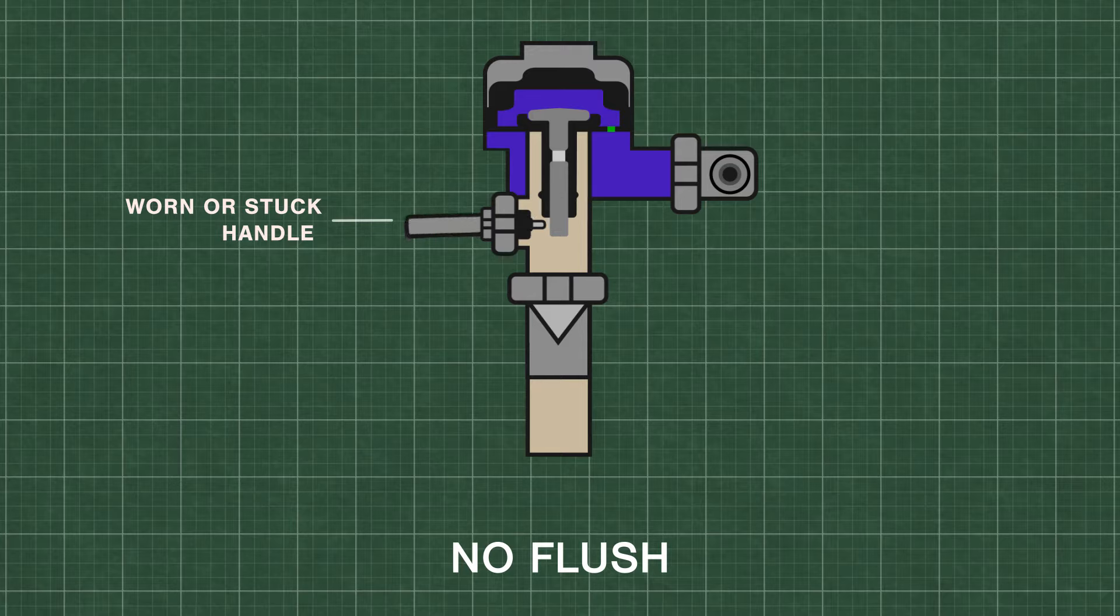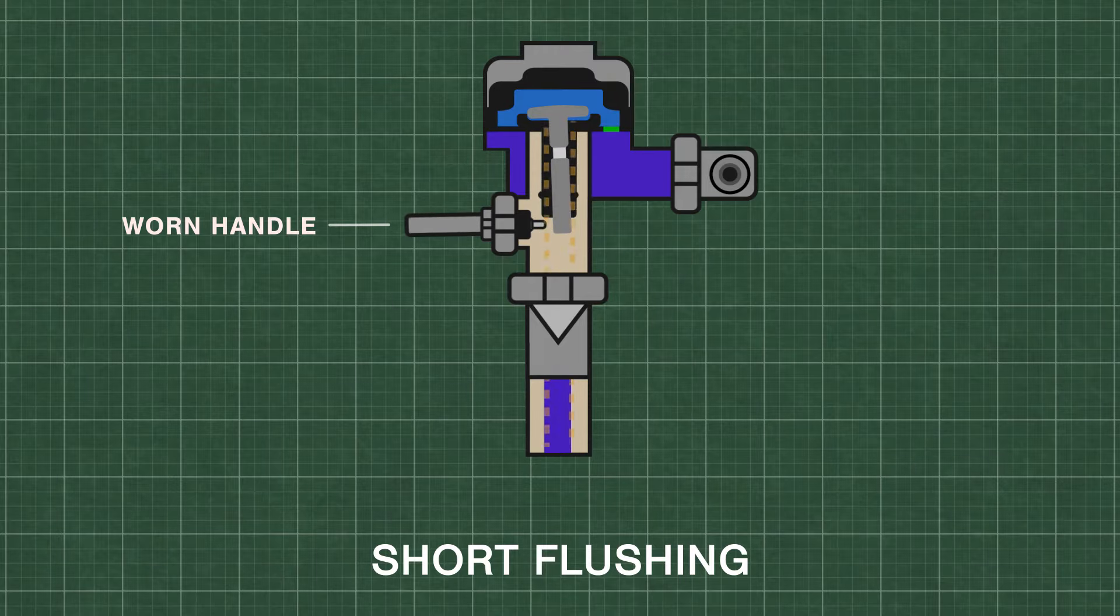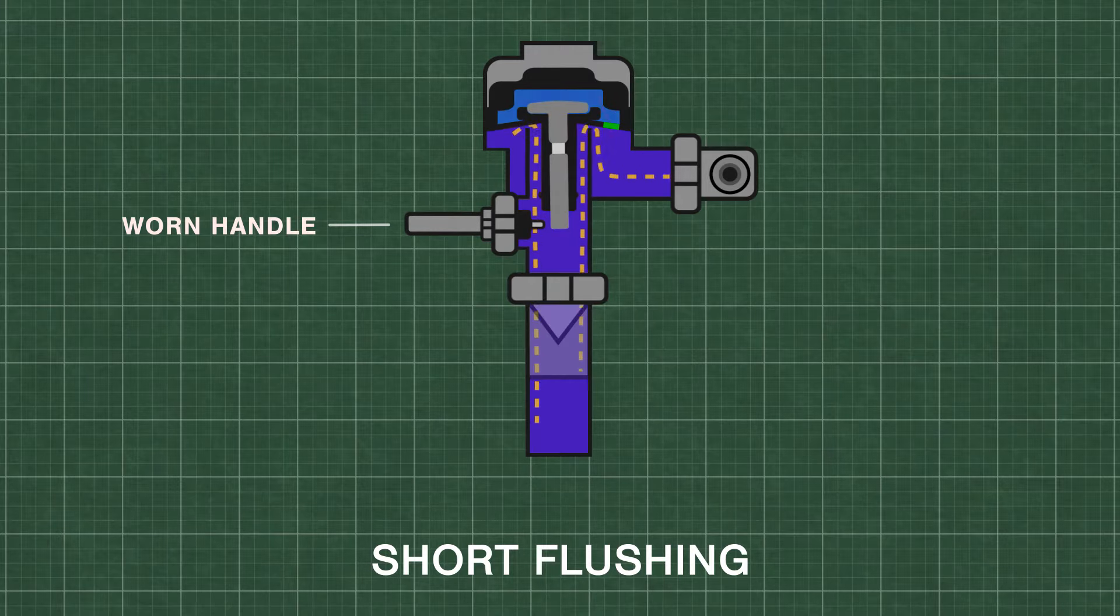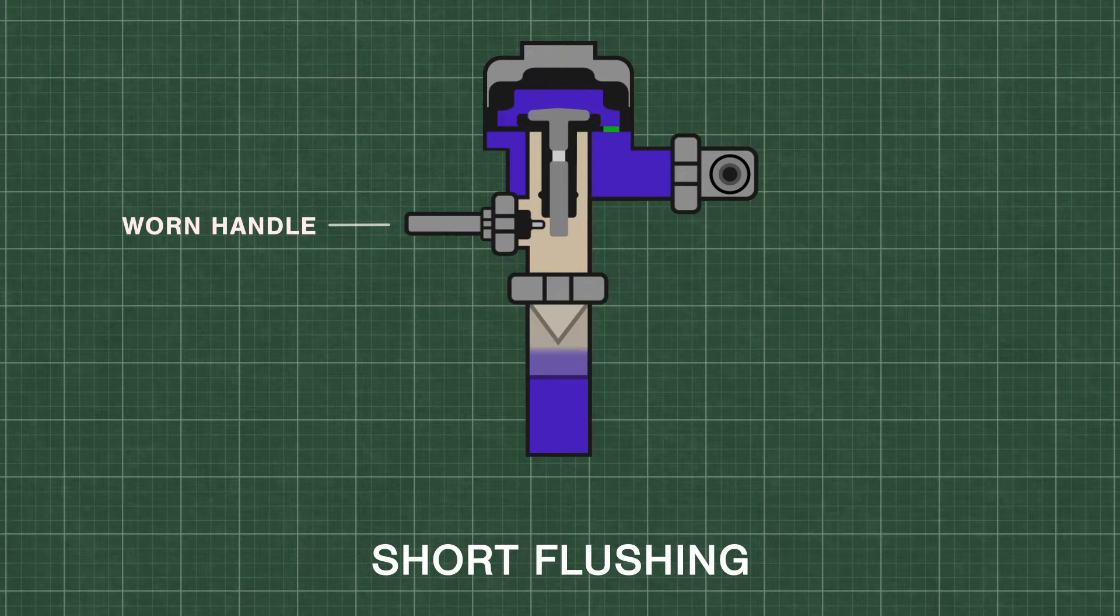If the handle assembly is worn down or starts sticking, the flushometer might not function. Additionally, a worn handle might also cause short flushing if it fails to open the relief valve all the way. You can replace the entire handle or the inside parts.